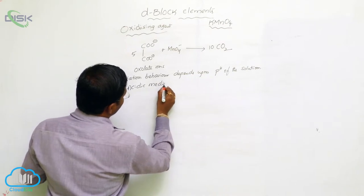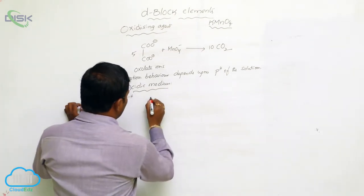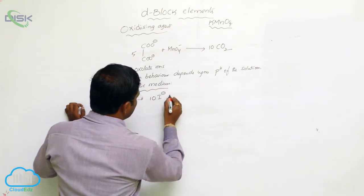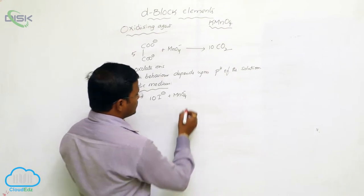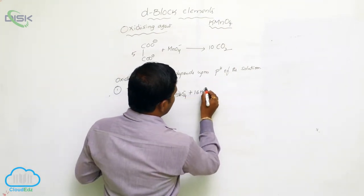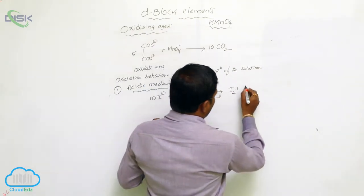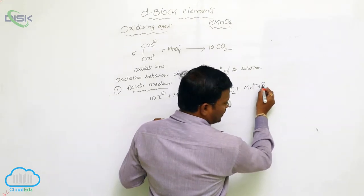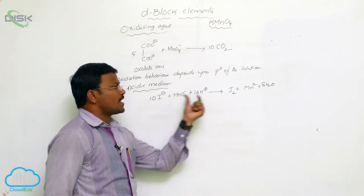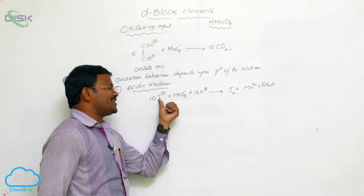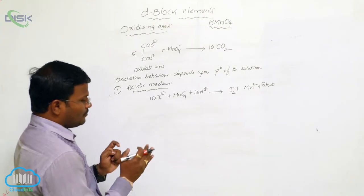In acidic medium, iodide ions when interacted with potassium permanganate — permanganate ions can oxidize iodide to iodine, forming Mn²⁺ plus 8H₂O. So iodide ions are oxidized to iodine, where the −1 oxidation state of iodine converts into 0.